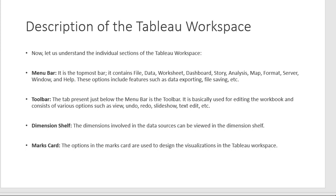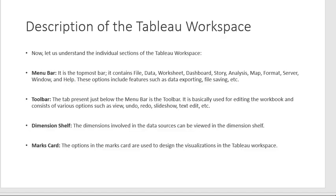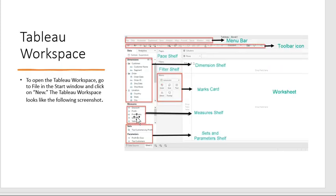The next component is the Dimension shelf. The data source can be viewed in the dimension shelf. It shows dimensions of the data such as Order ID, Order Date, Customer Name, Location, Country, State, and Segment. It also shows all geographical dimensions and represents various attributes of the data.